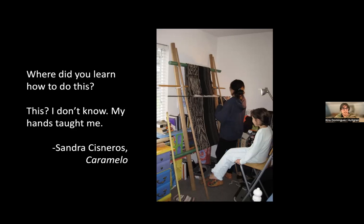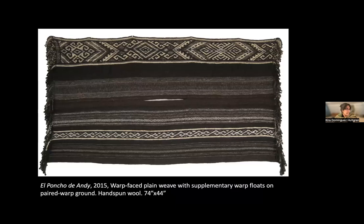Sandra Cisneros in her novel Caramelo tells a story about a family through weaving, nodding really the fringe of a rebozo. A rebozo is a shawl and one of the symbols of Mexican identity. In Caramelo, characters in later generations struggle with having lost the material knowledge that makes the caramel-colored rebozo that each generation wraps around themselves. 'Where did you learn how to do this?' 'I don't know. My hands taught me.'